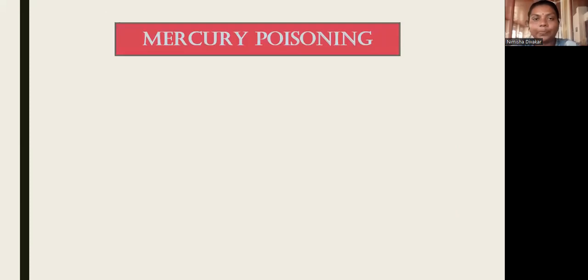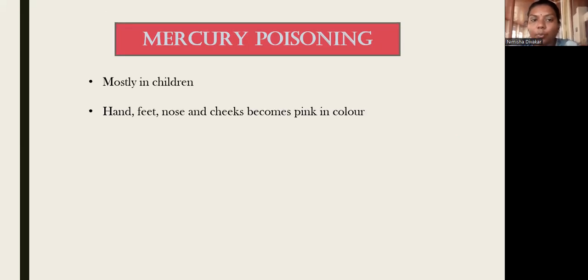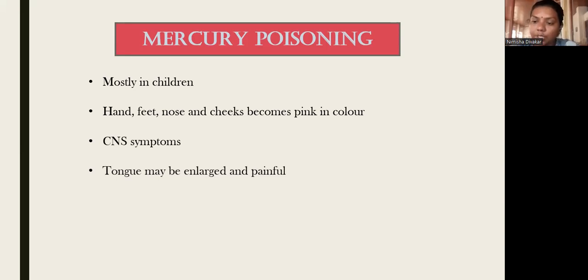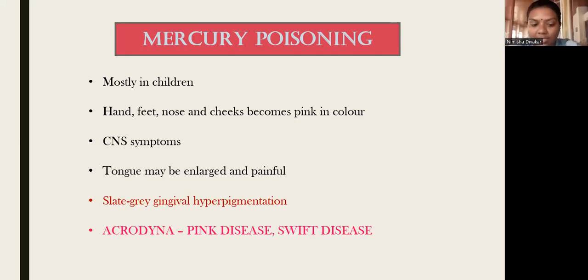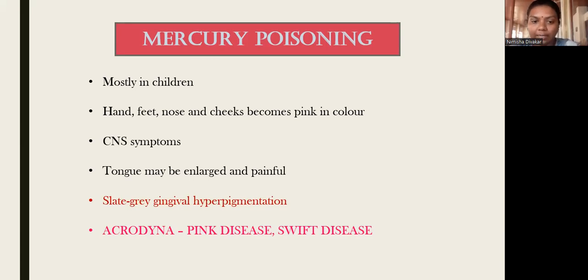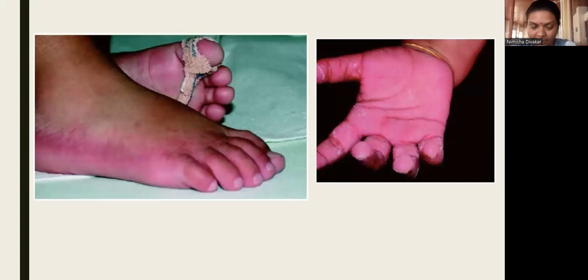The second heavy metal which causes oral and perioral pigmentation is mercury. This is mostly seen in children. In mercury poisoning, hands, feet, nose, and which become pink in color. There will also be other symptoms, and the tongue may be enlarged and painful with a gray gingival hyperpigmentation. Mercury poisoning is also known as acrodynia or pink disease.